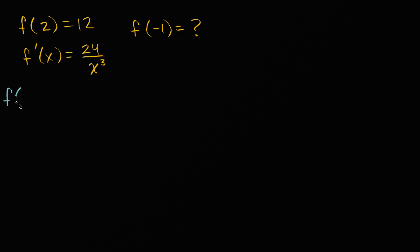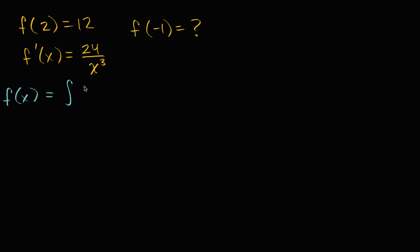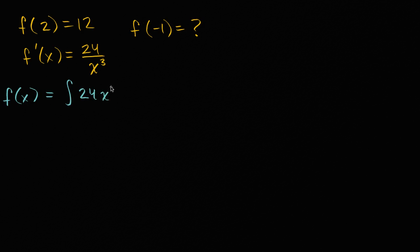We can say that f of x is going to be equal to the anti-derivative, or the indefinite integral, of f prime of x, which is equal to 24 over x to the third. To help process it a bit more, I'm going to write this as 24x to the negative three, because then it'll be clearer how to take that anti-derivative dx.